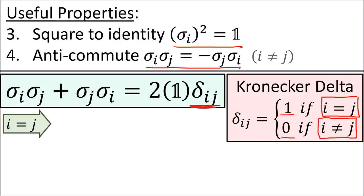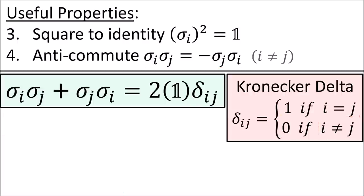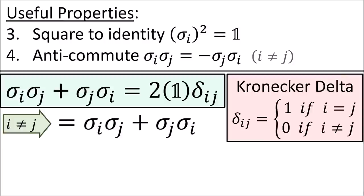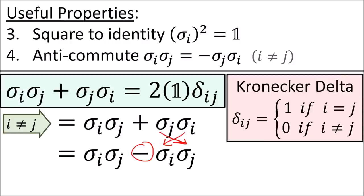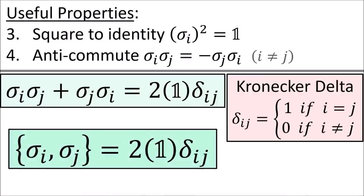Basically, if we put the same sigma matrix in for both i and j, both products square to the identity, so we get 2 times the identity. But if the two sigma matrices are different, then the anti-commutative property means the terms cancel to 0. This formula can be shortened even further using this notation, where these curly brackets denote the anti-commutator of two matrices.